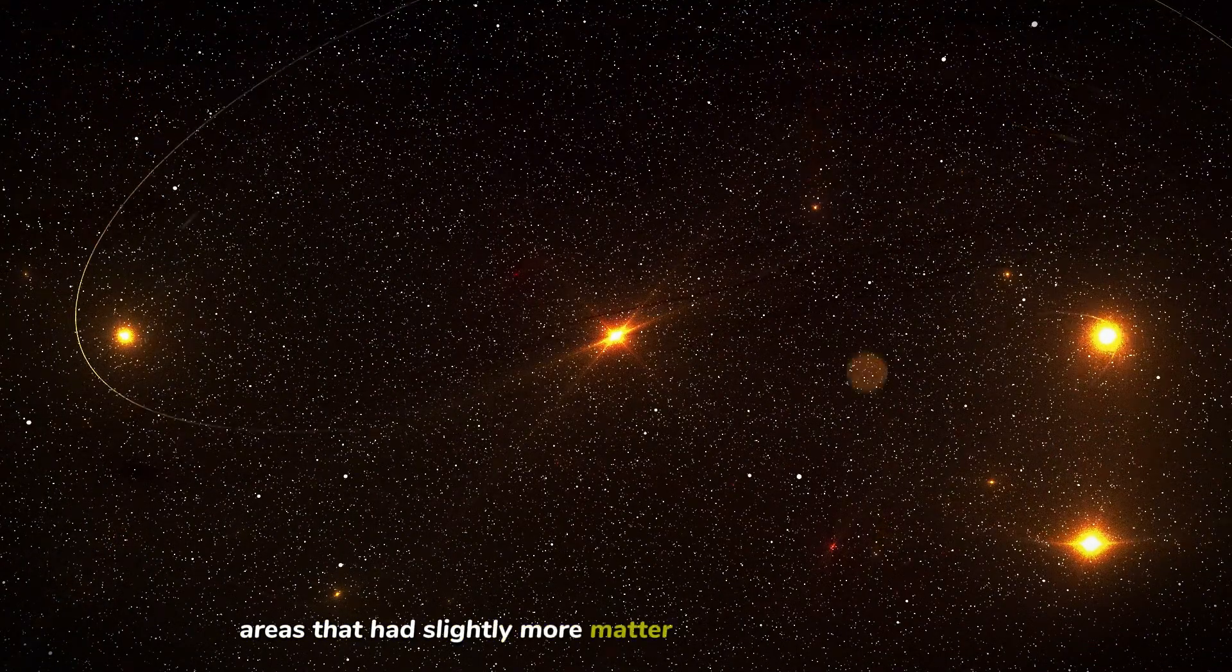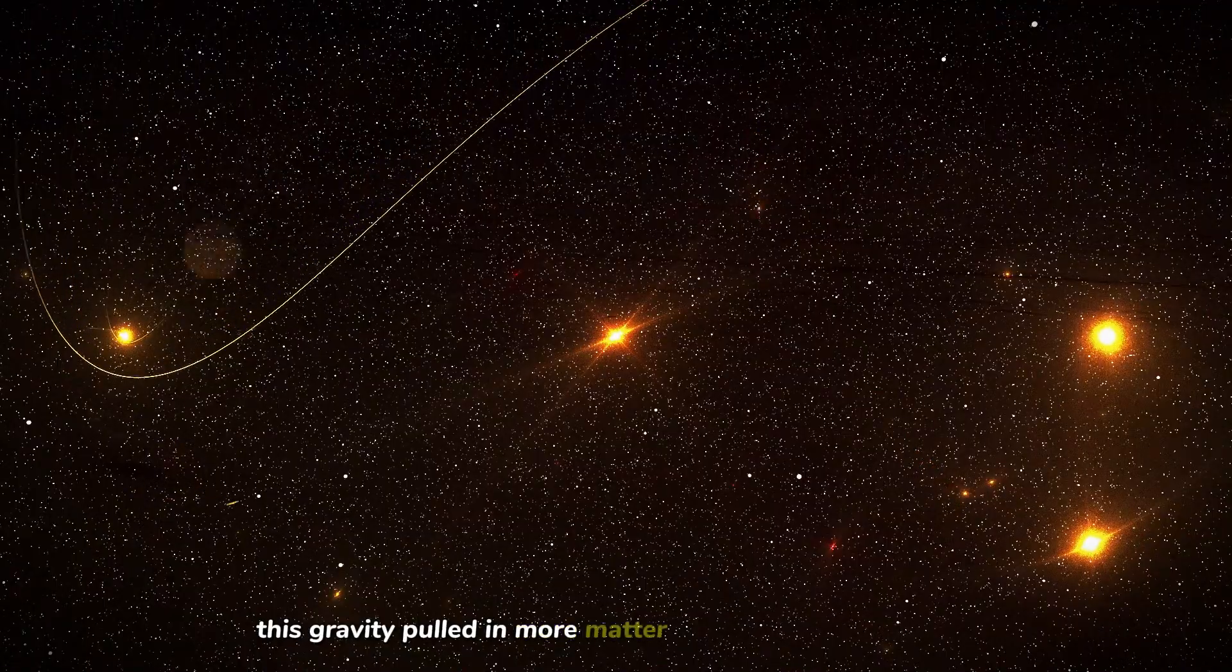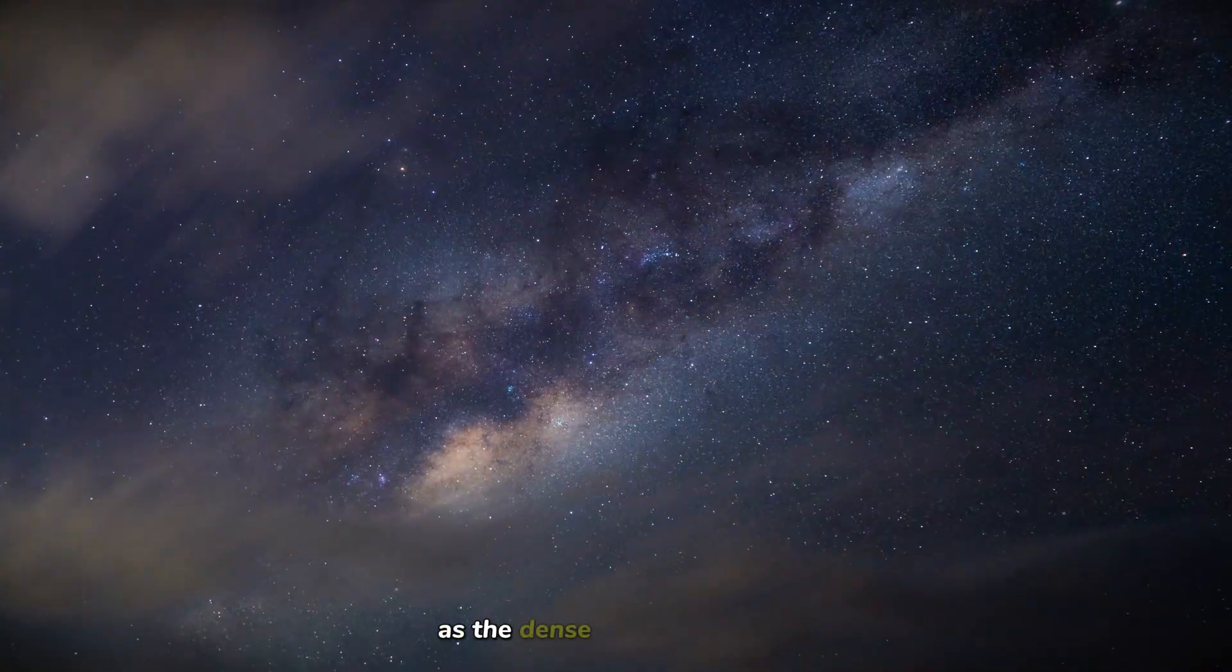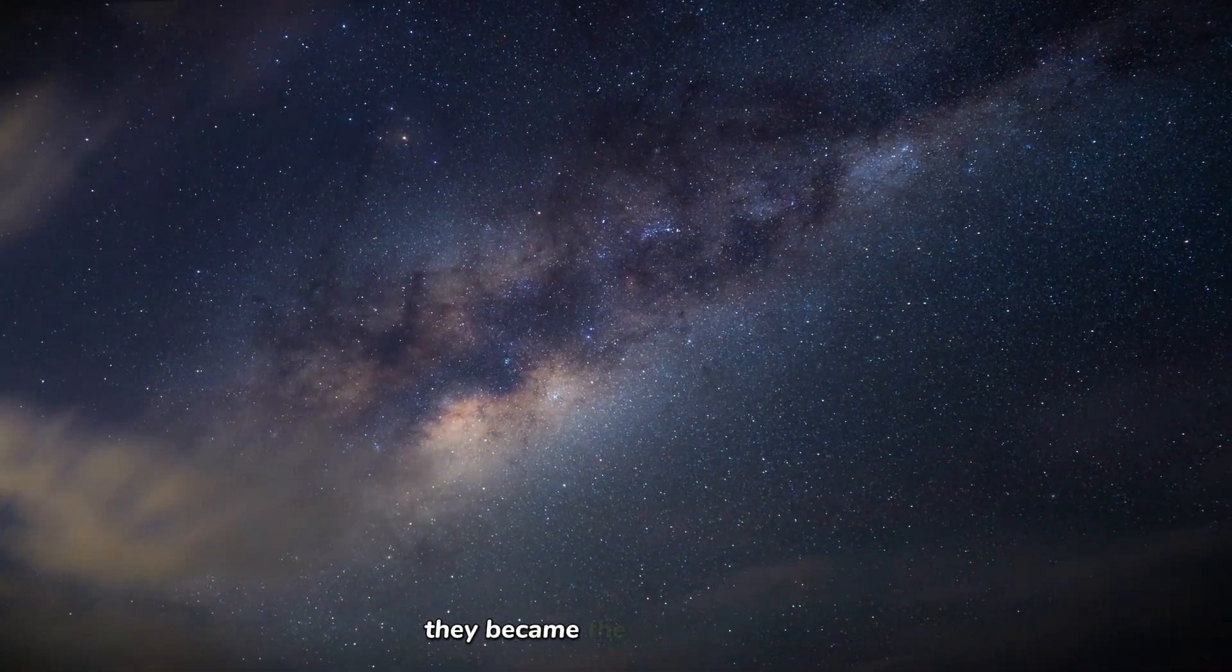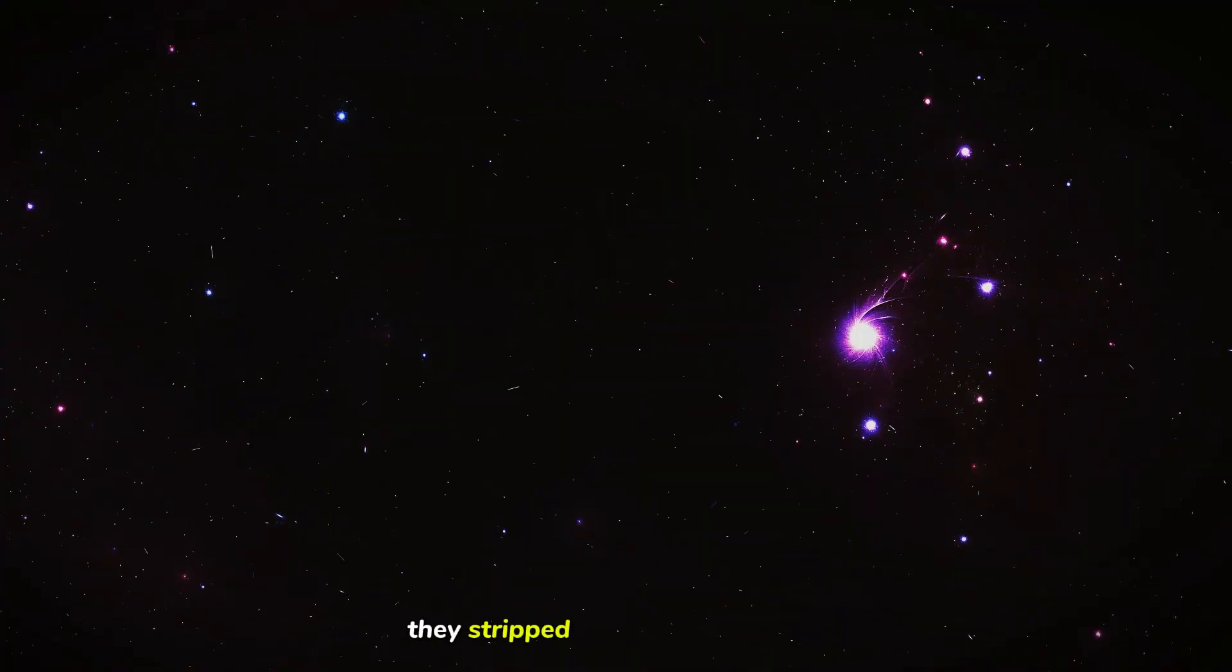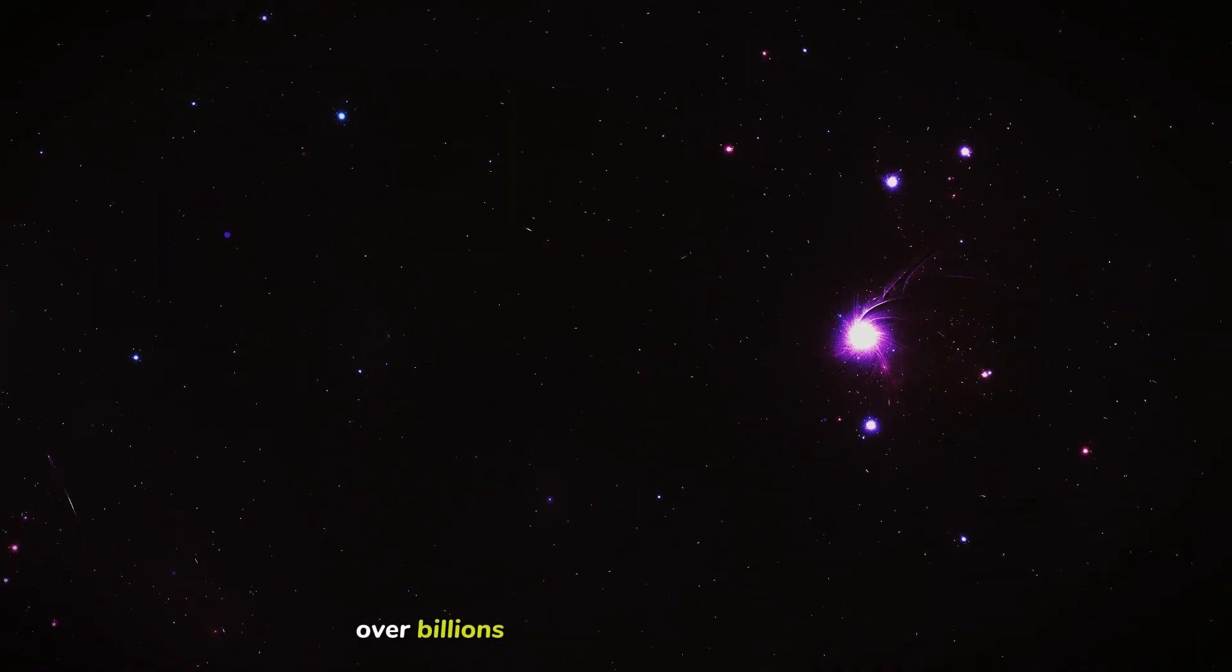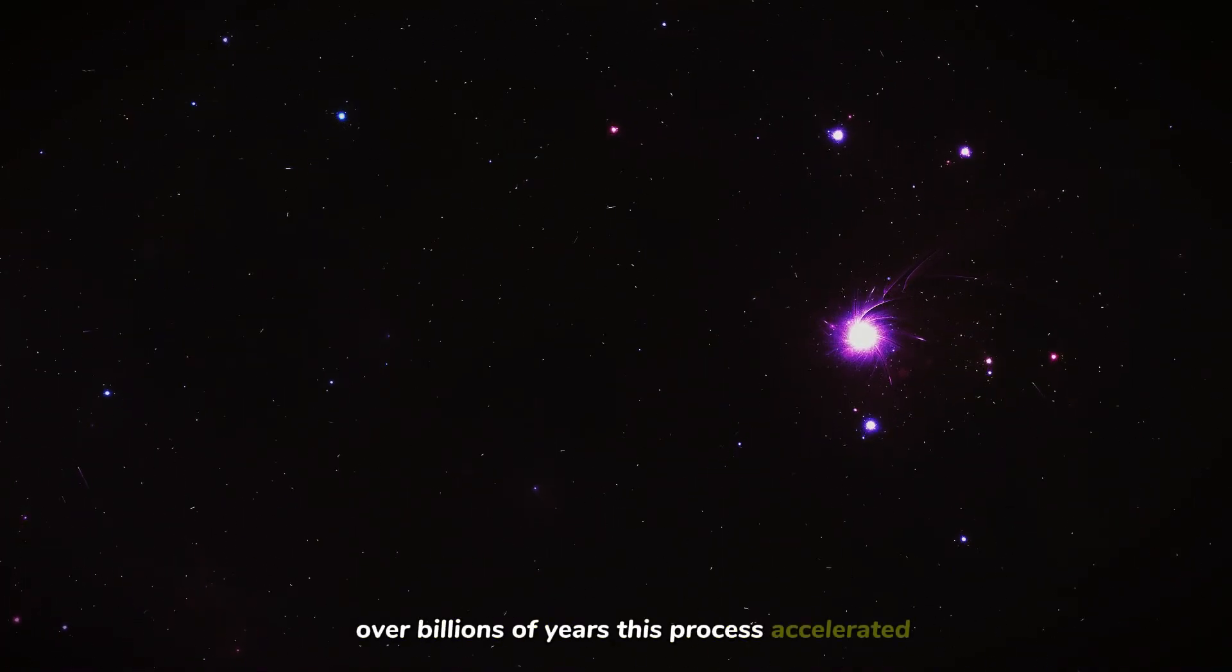Areas that had slightly more matter had slightly stronger gravity. This gravity pulled in more matter from the surrounding areas. As the dense regions got denser, they became the seeds of galaxies. But as they pulled matter toward them, they stripped the regions in between, leaving them emptier and emptier. Over billions of years, this process accelerated.